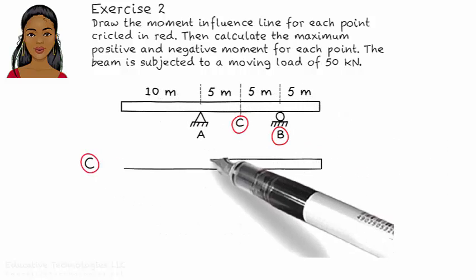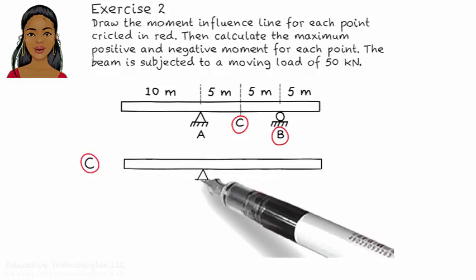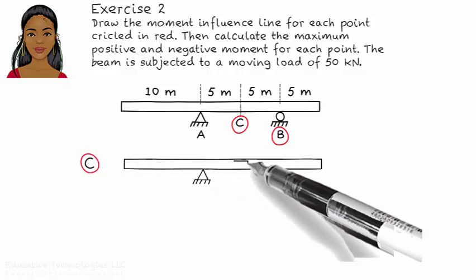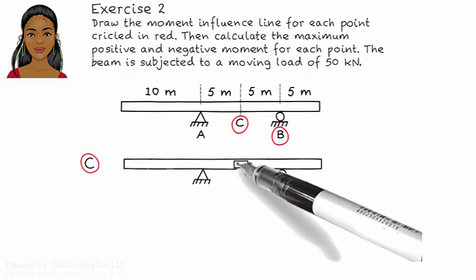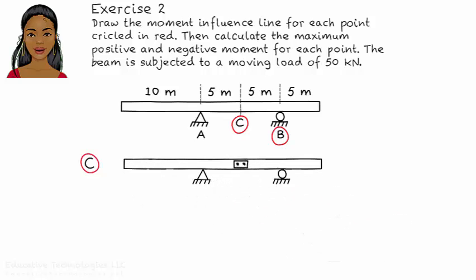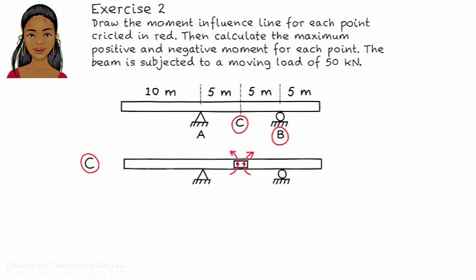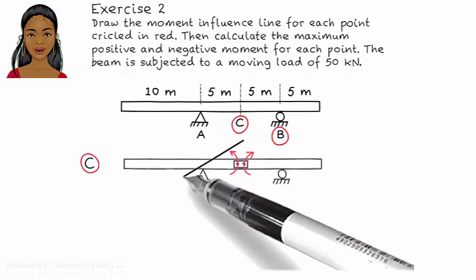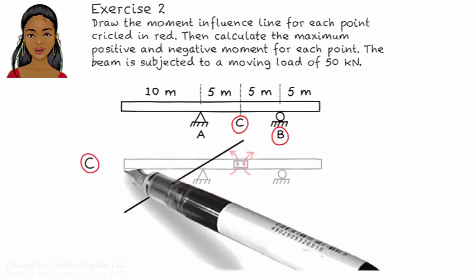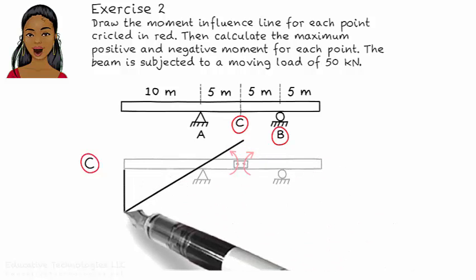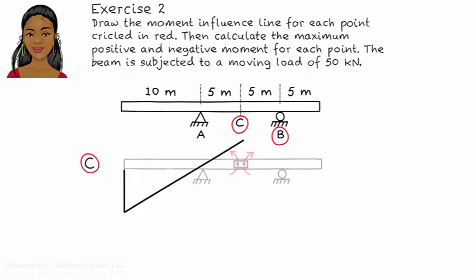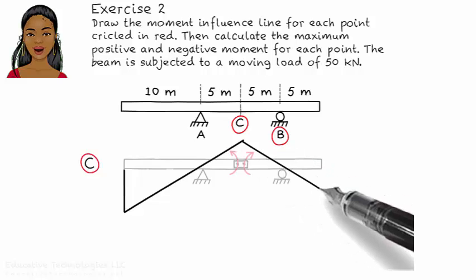Drawing the moment influence line for point C. Place a hinge at C and apply a positive moment to the hinge. The left segment of the beam turns counterclockwise, and the right segment of the beam turns clockwise.